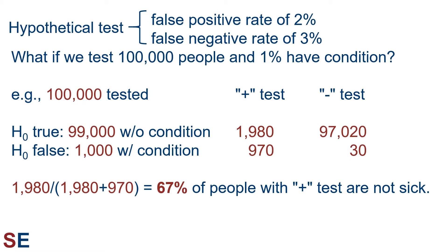A total of 1,980 plus 970 equals 2,950 individuals who receive a positive test result. Of those, 1,980 are individuals that don't have the condition. That would mean that 1,980 divided by 2,950 equals 67% of people with a positive test result are, in fact, not sick. So now, even though our test is still pretty good with that 97% or 98% accuracy, it returns a mistake over half of the time.